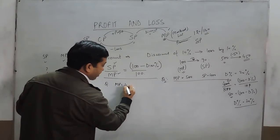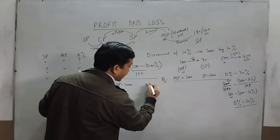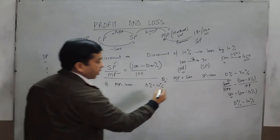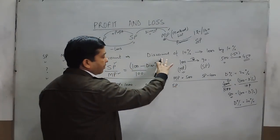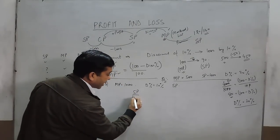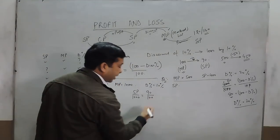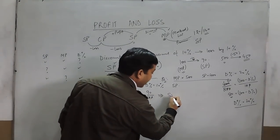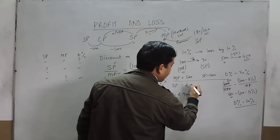Now the second example: the mark price is 1000 rupees and the discount percent is 10%. We have to calculate the selling price. We put it in the same ratio: SP / 1000 = 90 / 100. Once we calculate and cancel, the selling price comes out to be rupees 900. So the correct answer is rupees 900.